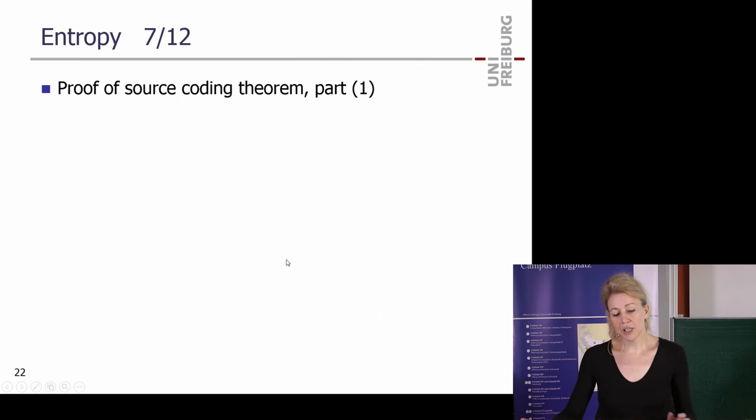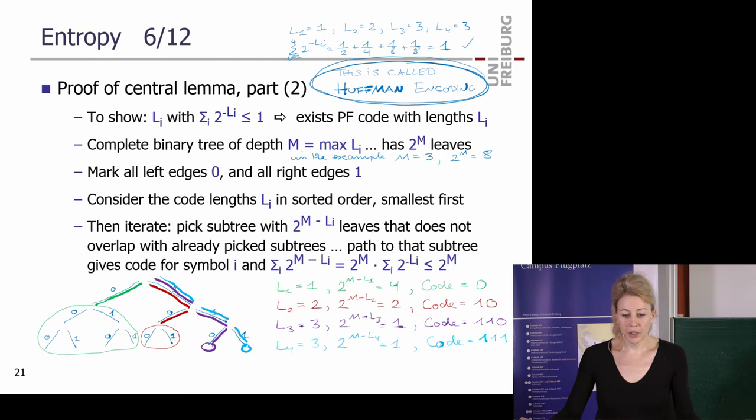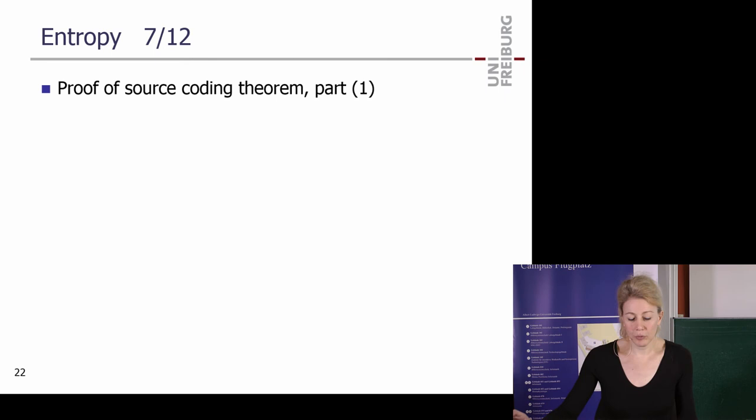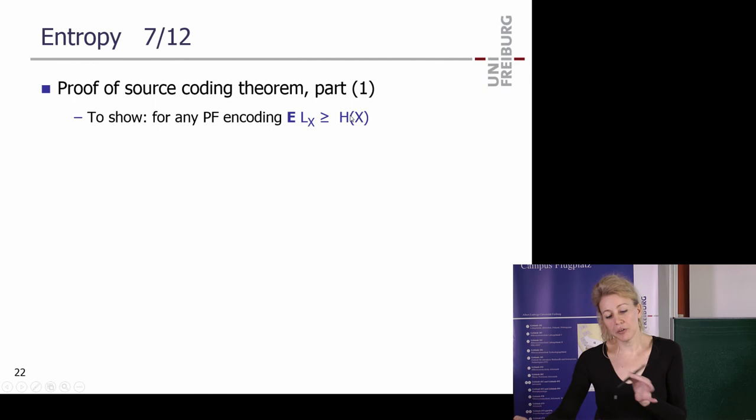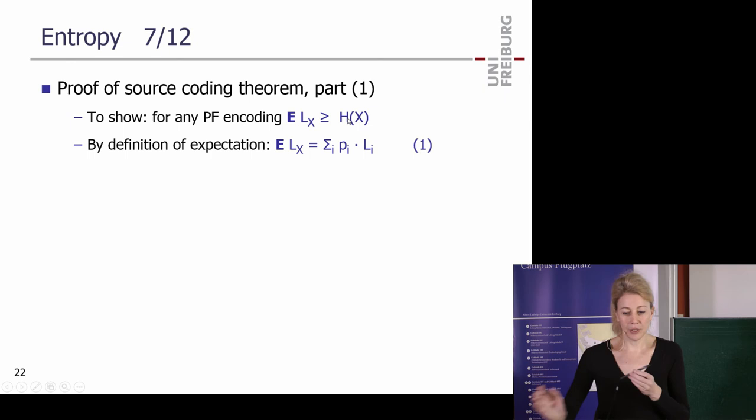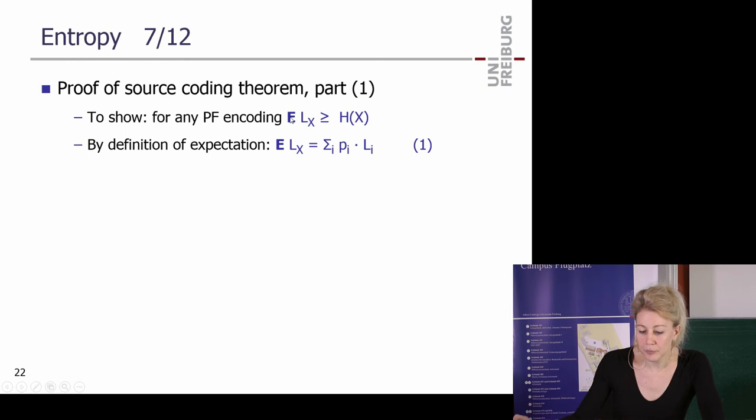Now for the source coding theorem: one direction states that whatever prefix-free code you take, the average code length is at least the entropy. The argument uses average code length and Kraft's inequality — you will complete this proof in the exercises.